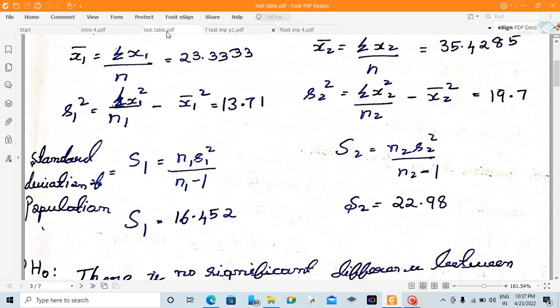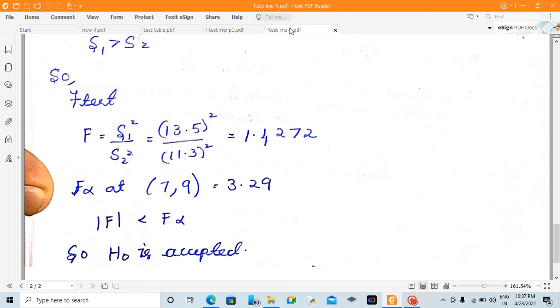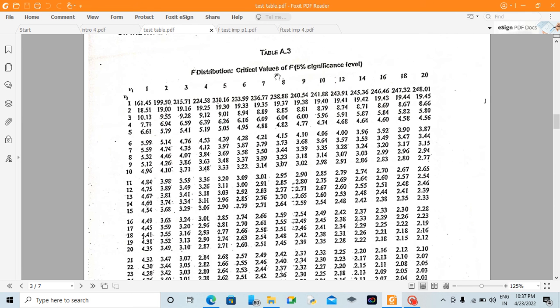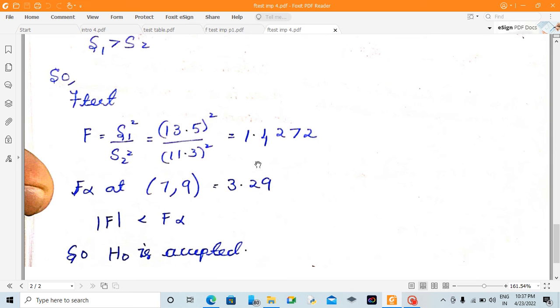You can see the table. What value you need to find: 7, 9. When we see here 7, 9, we can see 3.29. Then, modulus of F is less than F alpha, so H0 will be accepted. Thank you viewers.